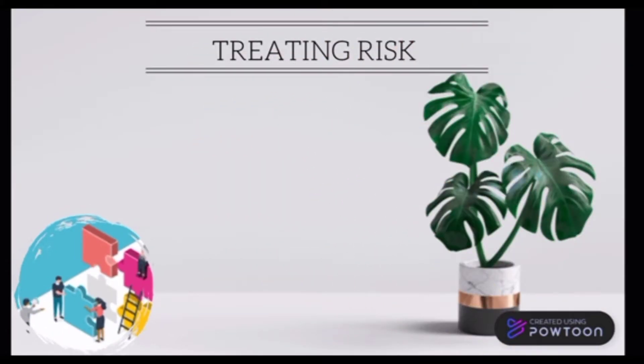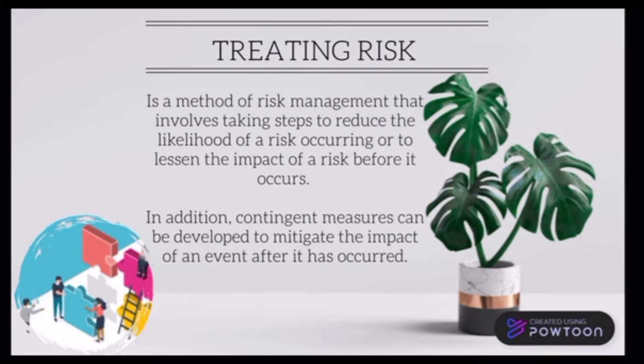The third T is treating risk. It's a method of risk management that involves taking steps to reduce the likelihood of a risk occurring or to lessen the impact of a risk before it occurs. In addition, contingent measures can be developed to mitigate the impact of an event after it has occurred.